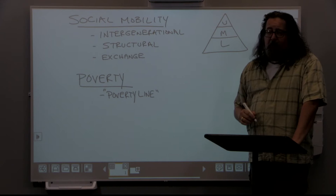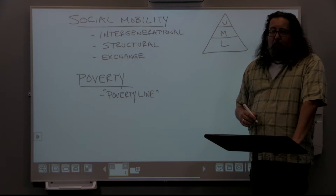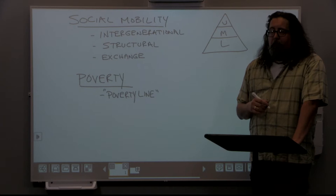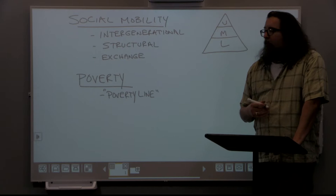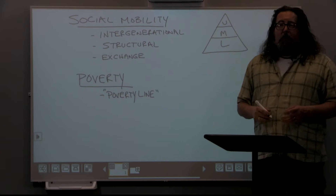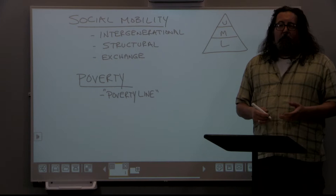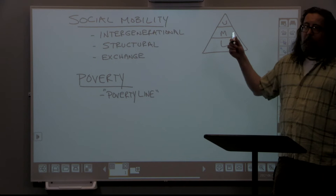One is intergenerational. We can look at mobility that occurs between generations. Sometimes we use the idealized term the American Dream, where we talk about people moving upward in society. More specifically, we refer to the idea that in our society, children should be better off than their parents. If your parents were lower class and worked very hard to send their children to school, and those children got a better education, the assumption is that translates into better jobs and upward mobility.